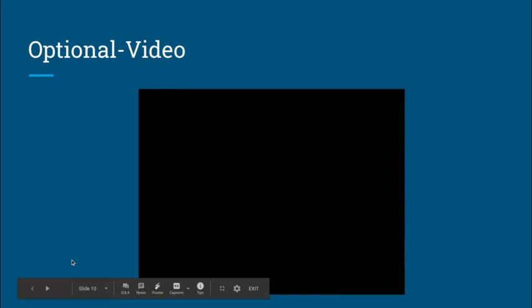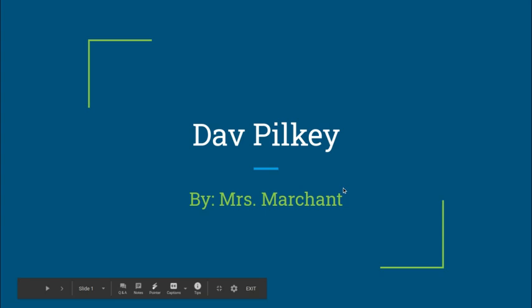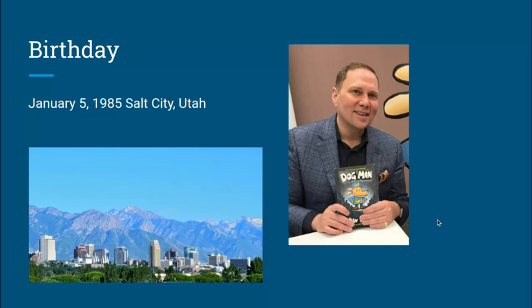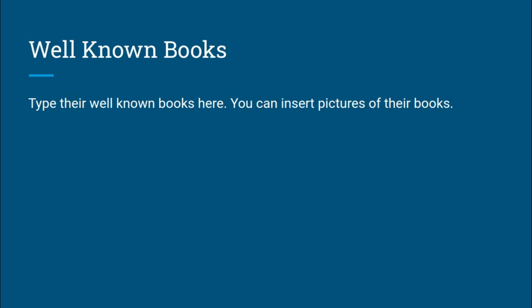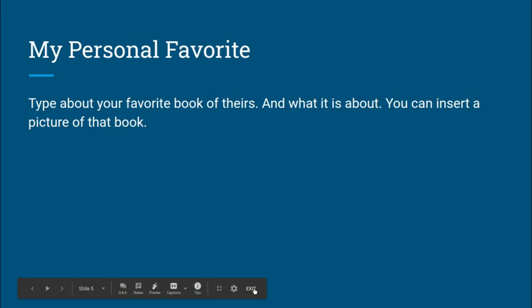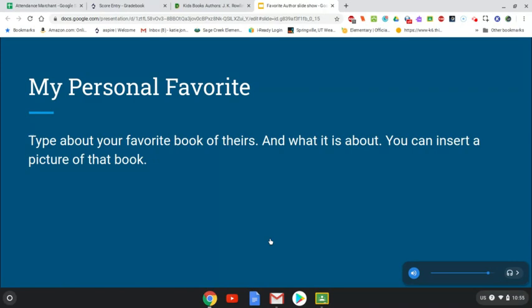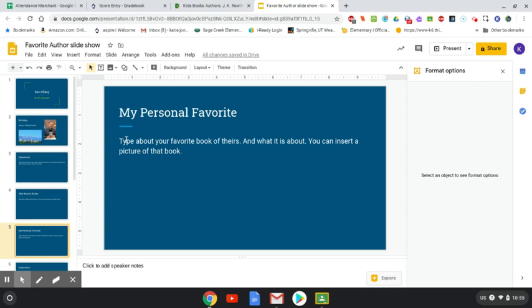The slideshow shows full screen, and you can click through the slides to present it to your family. It started on slide 10, so if I want to start on slide 1, I can click on Slides and click Slide 1. Then I'd do a presentation saying this is about Dave Pilkey and facts I learned about my favorite author. To get out of full screen, you can click on the slide and then click Exit, and it goes back to normal.